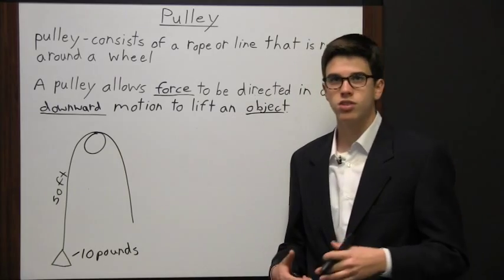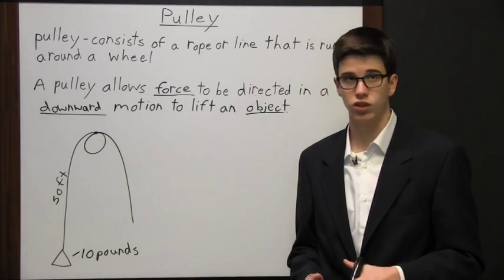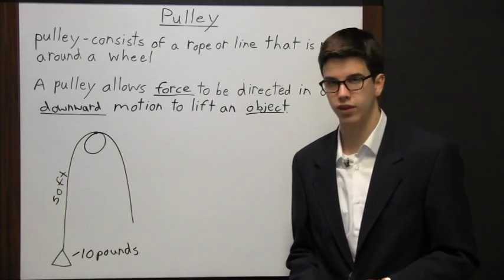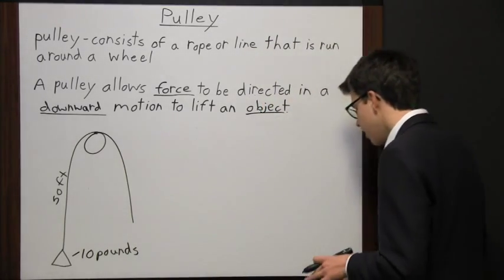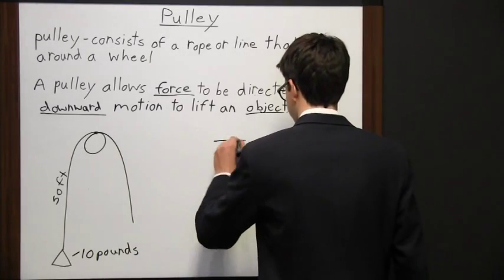Now say you used a combination pulley such as a double pulley. The weight is moved half the distance of the rope pulling it. To explain that I'm going to have to draw a diagram.